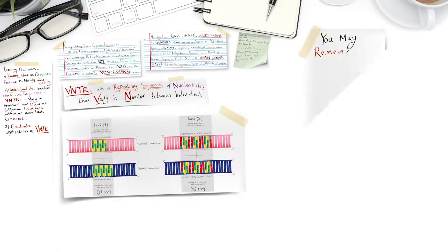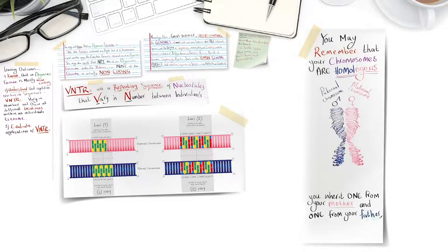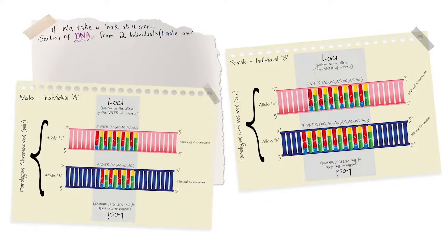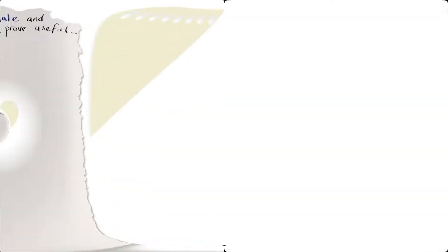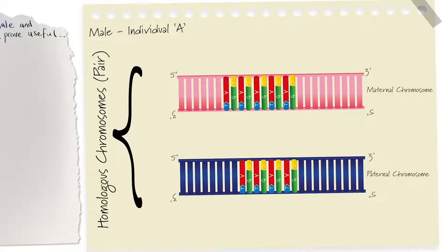You may remember that your chromosomes are homologous. You inherit one from your mother and one from your father to give you a homologous pair. If we have a look at a small section of DNA from two individuals, one male and one female, we can see how these VNTRs can prove useful. So here we have individual one, a male, and here are his homologous chromosomes. The pink chromosome represents his maternal chromosome, which he inherited from his mother, and in dark blue we have the chromosome inherited from his father.